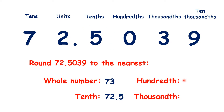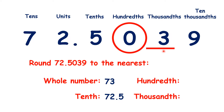Now for the nearest hundredth, we find our hundredths digit, and if we look across to our thousandths digit, we can see that we're rounding down. So we could write 72.50 as our answer, but remember, a zero on the end of a decimal number doesn't change that number, so we can just write 72.5 as our answer.